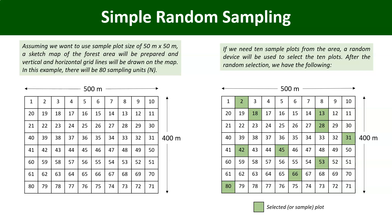After using the random device, let's say the following plots are selected: 2, 13, 18, 28, 31, 42, 45, 53, 66, and 80. These are the plots randomly selected, and this becomes the field layout for the inventory crew to carry out the enumeration. If my starting point is at the top of the area, the first plot I will encounter for enumeration will be plot 2, and after enumerating plot 2 I can move to plot 18.